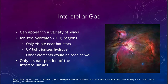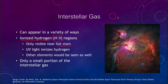First, there is interstellar gas. Gas between the clouds can be seen in a number of ways. One way is in ionized hydrogen, or what we call HII regions — that's H with the Roman numeral two after it. These are only visible near hot stars. This is what we call the Orion Nebula, and this is an example of that.